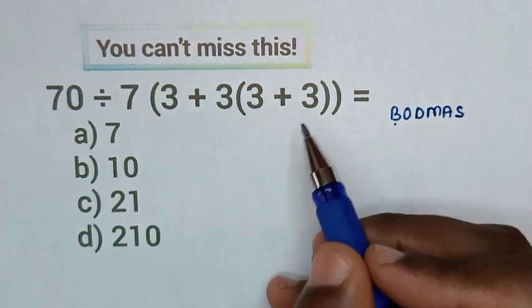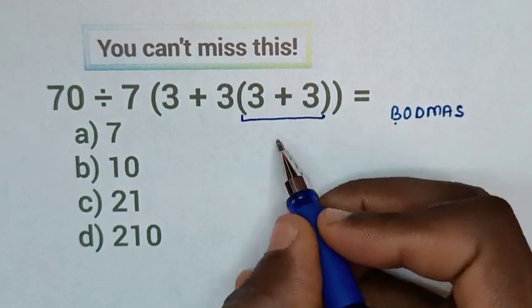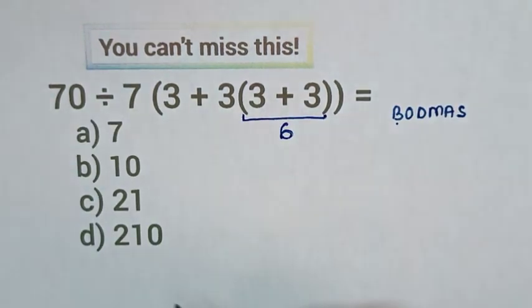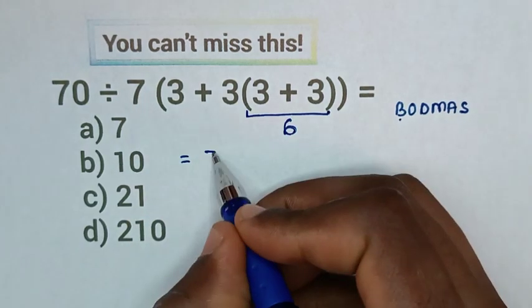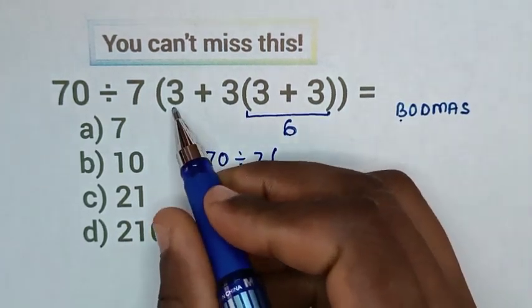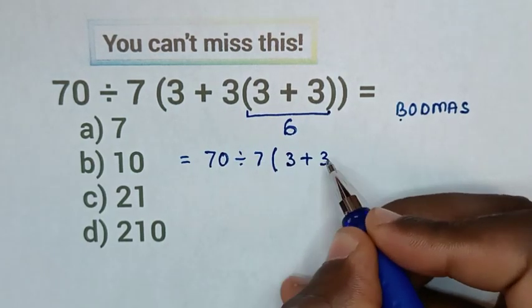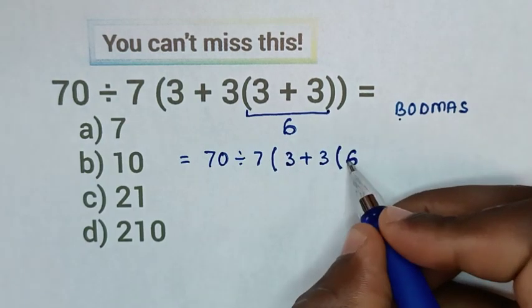Start with this inner bracket of 3 plus 3, which is 6. Then it will be equal to 70 divided by 7, then bracket 3 plus 3, bracket 6.